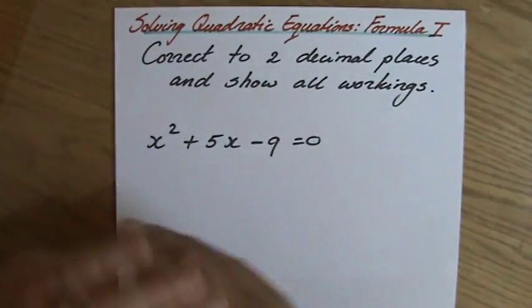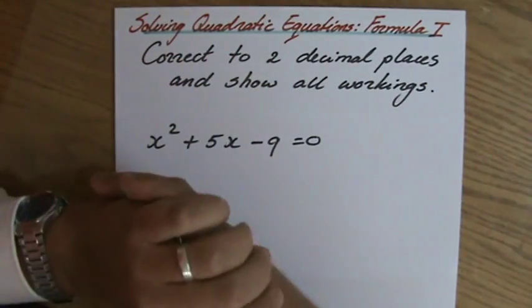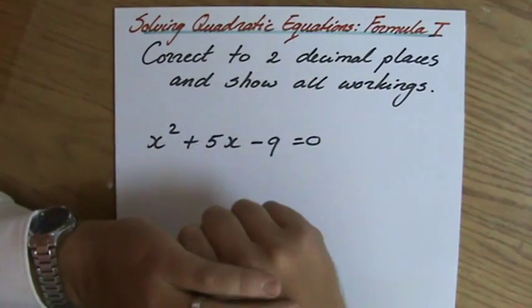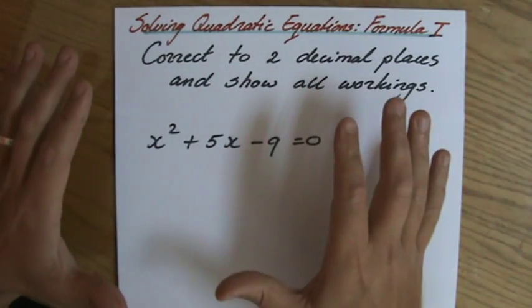The question usually is: correct your answers to two decimal places and show all your workings. Now the fact that they say correct to two decimal places already suggests that you cannot factorize it.